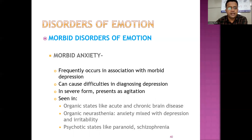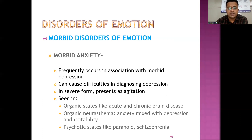Morbid anxiety frequently occurs in association with morbid depression and can cause difficulties in diagnosing depression. In severe form it presents as agitation. It is seen in organic states like acute and chronic brain disease, organic neurasthenia in which anxiety is mixed with depression and irritability, and psychotic states like paranoia and schizophrenia.